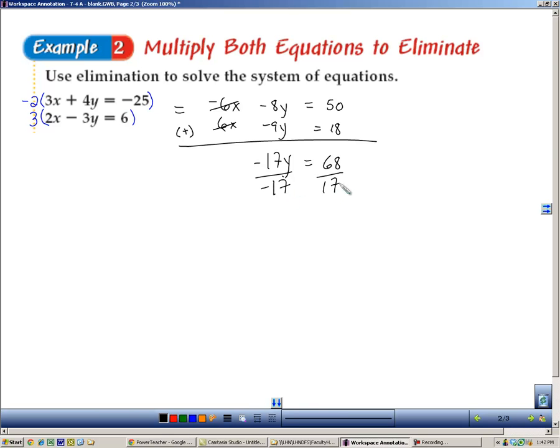Divide both sides by negative 17, and y is going to equal a negative 4. I need to plug that into one of these. I'll plug it into the second one. So 2x minus 3 times negative 4 equals 6. Well, this is going to be a positive 12, so I will subtract that to give a 0. So 2x equals negative 6, divide both sides by 2, and you get x equals negative 3.